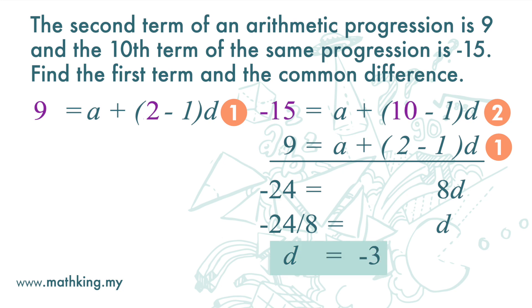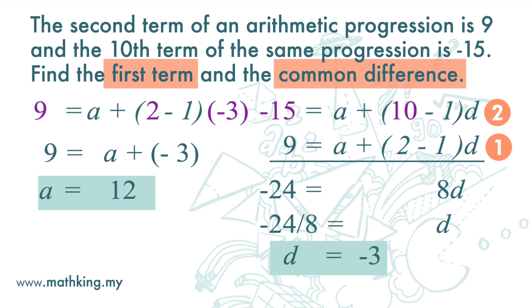Then we substitute negative 3 into d in the first equation, and we get 12. A is 12. So, the first term is 12, and the common difference is negative 3.